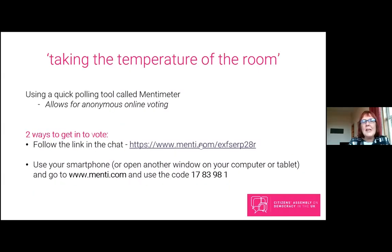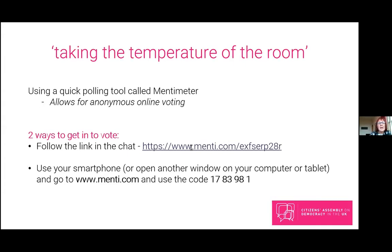We're going to use a tool called Mentimeter. Mentimeter is a polling tool that allows everyone to vote anonymously online. There are two ways to get into it: there's a link posted in the chat which will open up another window, or you can go to www.menti.com on a smartphone or tablet and use the code 1783981 to get into the poll.